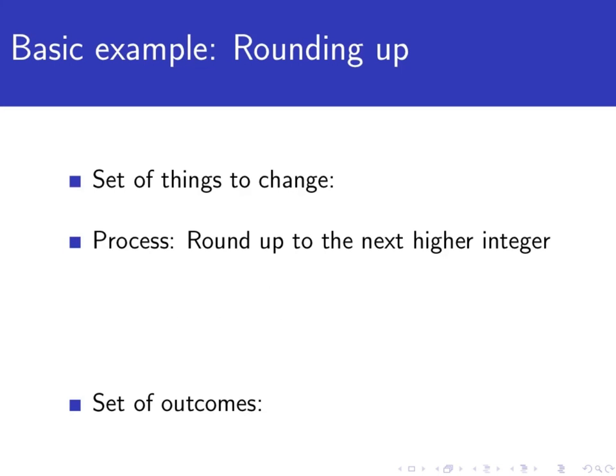So here's a simple example using numbers. For my set of things to change, I will let that just be the entire set of real numbers. My rule I will follow is given a real number, I want to round it up to the next higher integer. For example, if my real number that I start with is 5.2, then my rule says to turn the 5.2 into a 6, the next higher integer up.